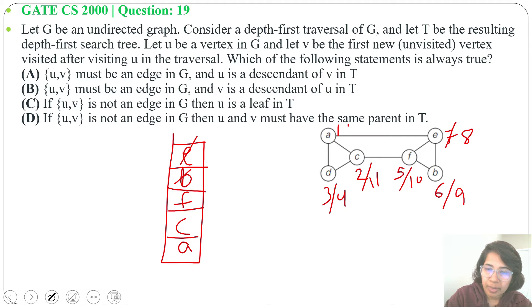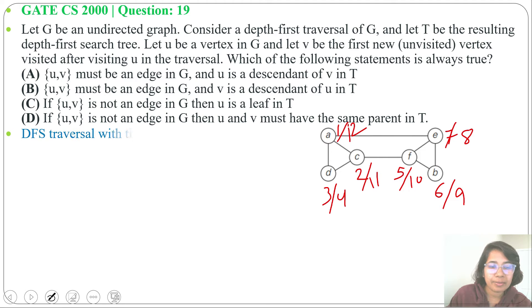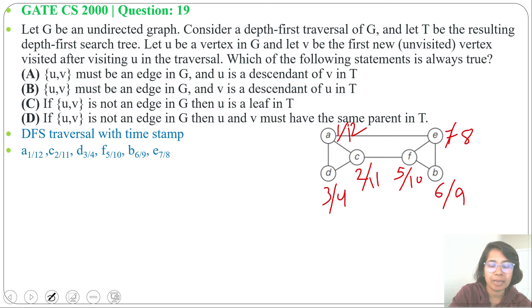Then we will backtrack from F, then from C, then from A — so its finishing time is 12. The DFS traversal with timestamps is: A, C, D, F, B, E — in this sequence we traverse it.